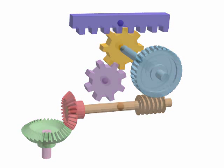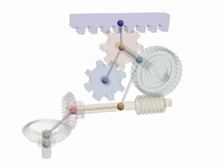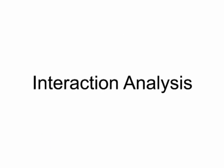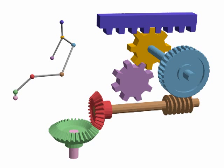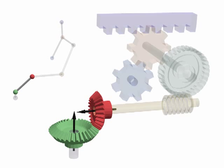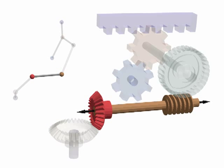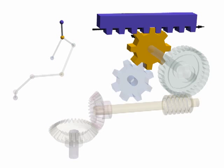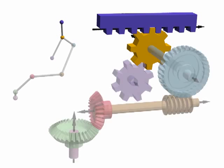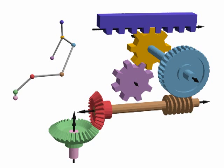We organize the motion relations using an interaction graph, where nodes represent individual parts and edges are mutual contact relations. Using the contact and per-part symmetry information, we classify motion interactions between parts into types, including cylinder on cylinder, bevel gear, coaxial, worm gear and cylinder on plane. For details, please refer to the paper.